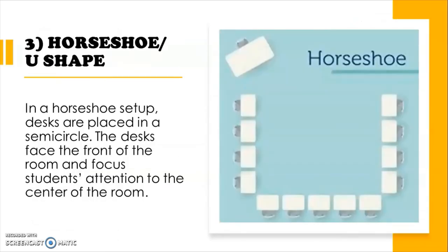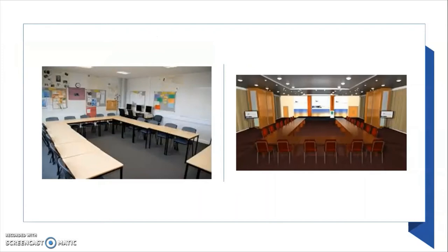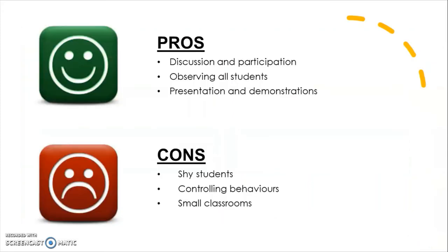The third one is horseshoe or U-shape. In a horseshoe arrangement, desks are placed in a semicircle. The desk faces the front of the room and focuses attention to the center of the room. The horseshoe is typically used for demonstration or group discussions, and supports both student-to-student and teacher-to-student interactions. Pros: encourages discussion and participation, makes it easy for the teacher to observe all students and give one-on-one help, and creates a large space for presentation and demonstration. Cons: it may be hard for shy students, it may be difficult to control behaviors, and it may not be possible in smaller classrooms because it uses more space than other designs.